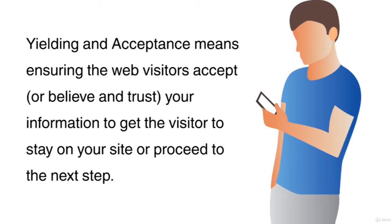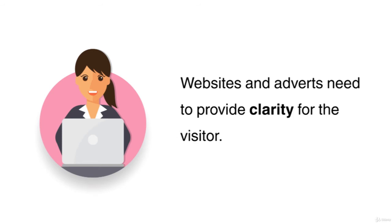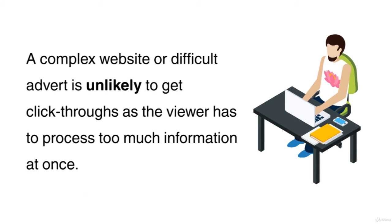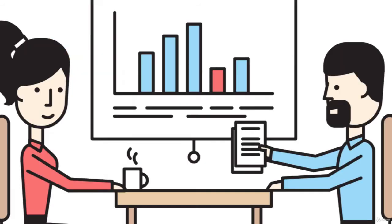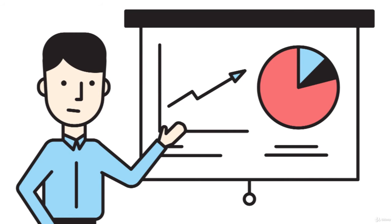Yielding and acceptance means ensuring the web visitors accept, believe, and trust in your information to get the visitor to stay on your website or proceed to the next step. Websites and adverts need to provide clarity for the visitor. A complex website or difficult advert is unlikely to get click-throughs, as the viewer has to process too much information at once. This means you have seconds to make an impact and to gain acceptance from the visitor. A good tip is to remember how many companies bid on their own brand names in pay-per-click campaigns, partly to capture relevant traffic and also as part of a wider brand strategy, as part of the trust and acceptance theory.